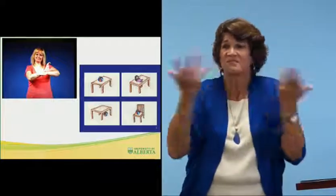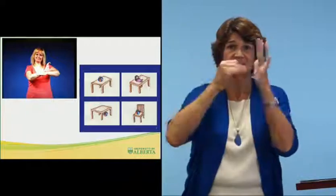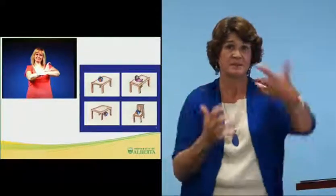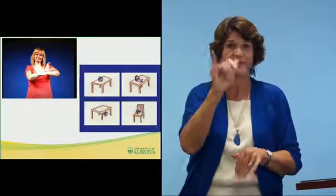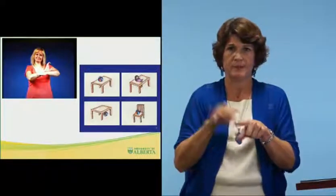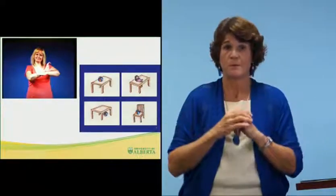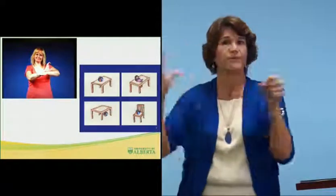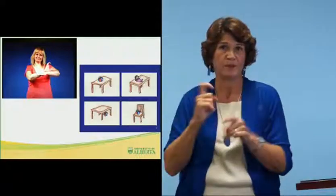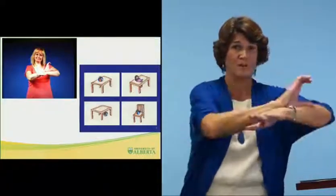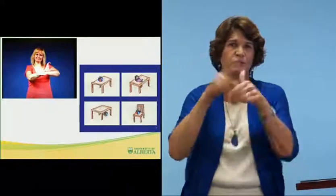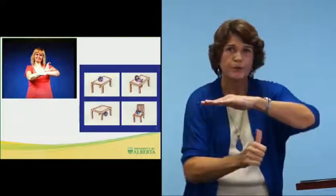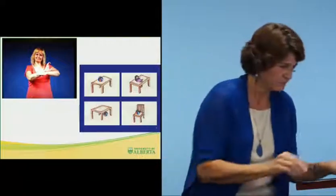Similar to the PPVT assessment, the child sees a signer on the screen. The signer signs 'ball' and places it in a location. That screen fades out, and the next screen shows four pictures. The child must identify which picture matches what they just saw from the signer — in this example, the ball on top of the table, not a doll, not a chair, and so forth.